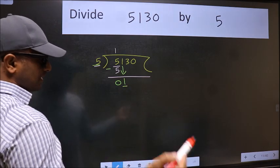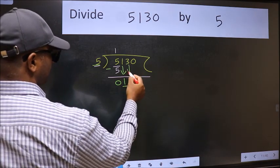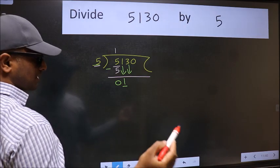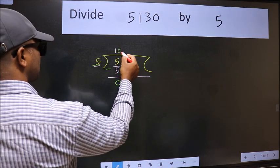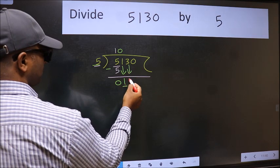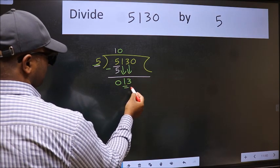So we should bring down the second number. And the rule to bring down the second number is we should put 0 here. Then only we can bring this number down. Now 13.